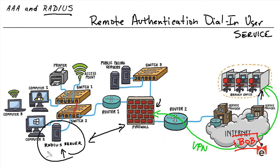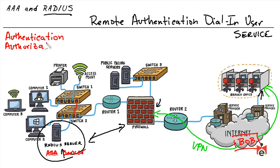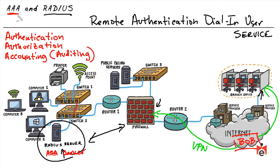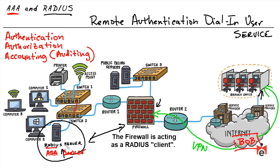Another common name for a RADIUS server is a AAA server. AAA represents three concepts: Authentication — verifying who users are; Authorization — determining what they're allowed to do once identified; and Accounting — keeping an audit trail of activities performed while logged in. RADIUS is the protocol used between a device like a firewall and the AAA server for all three: authentication, authorization, and accounting records of who logged in, when, and what activities they performed.